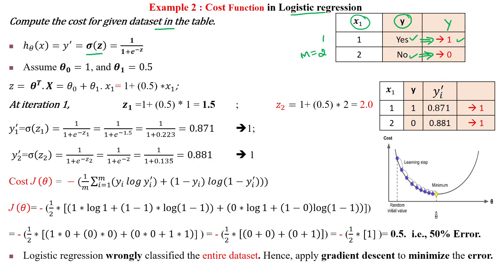The given sigmoid function for the hypothesis is ŷ = 1/(1 + e^(-g)). θ₀ is given as 1 and θ₁ is given as 0.5. Now we calculate the g value.